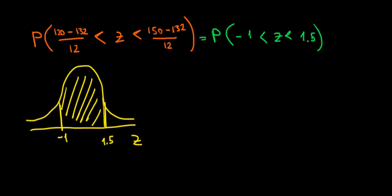Now, if we have a look in the z distribution, in the table for the z values, for the probabilities of the z values, we only have the areas to the left of the z value.